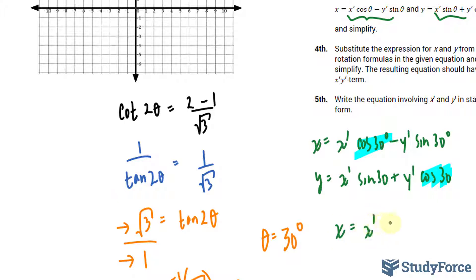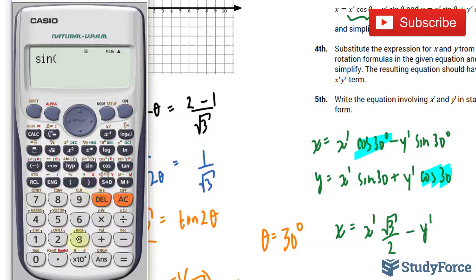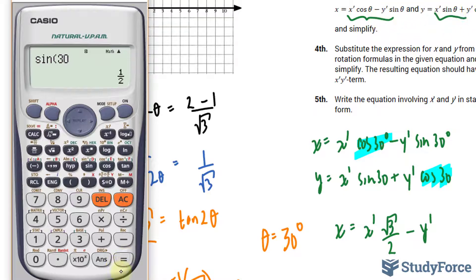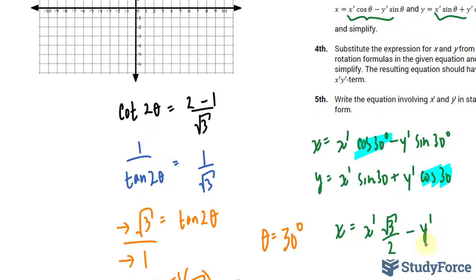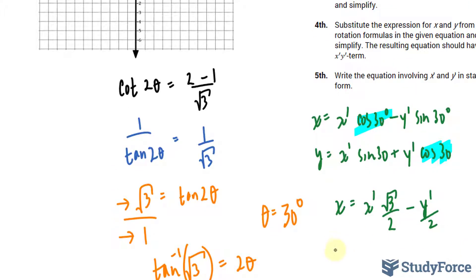x is equal to x prime the square root of 3 over 2 minus y prime. And let's find out what sine 30 is. That's equal to half. So y prime over 2 and y is equal to x prime over 2 plus y prime square root of 3 over 2. That's it for step number 3.